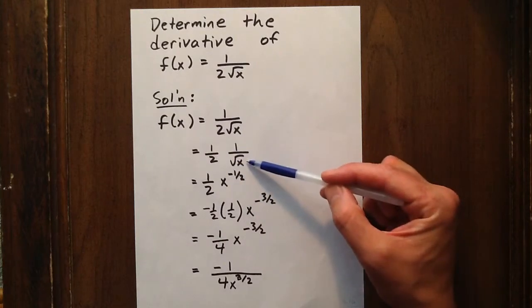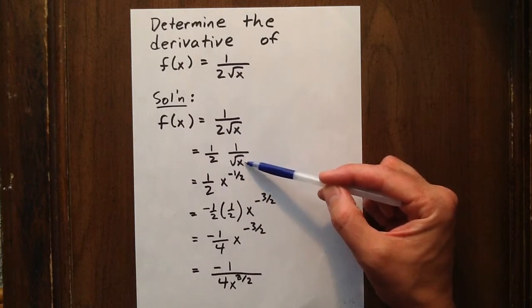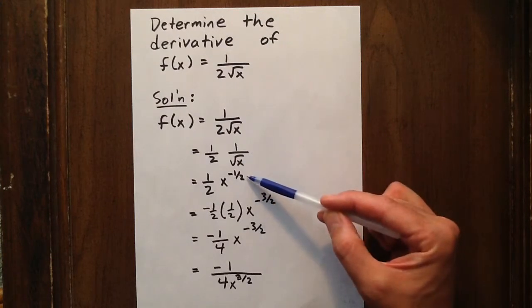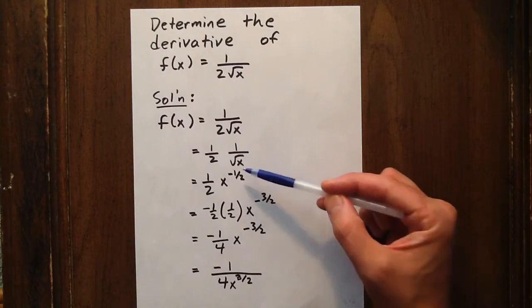That's 1 over 2 times 1 over root x. Well, root x is x to the 1 half, so we can express 1 over root x as x to the negative 1 half.